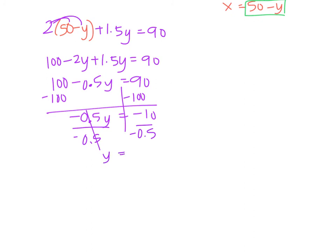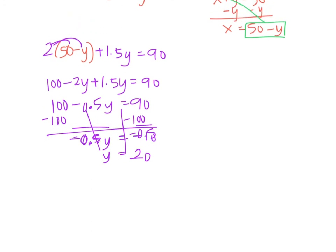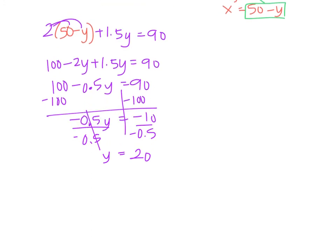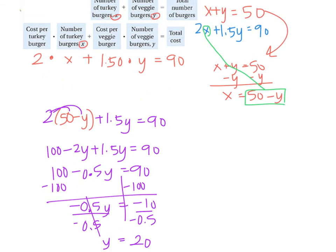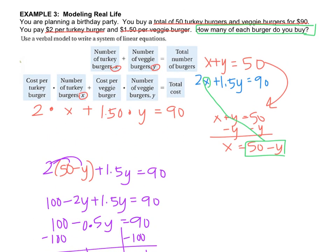And I get y is equal to, calculator's out, or maybe you don't need it, it's positive 20. So you go back up to the story, and you have to now scroll to figure out what y equaled. So y was the number of veggie burgers. So that means that I got 20 veggie burgers.